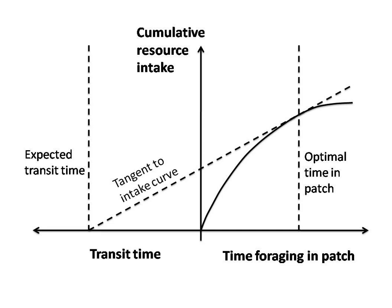The MVT was first proposed by Eric Charnov in 1976. In his original formulation, the predator should leave the patch it is presently in when the marginal capture rate in the patch drops to the average capture rate for the habitat.